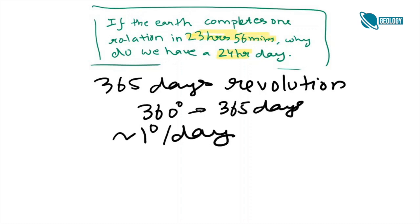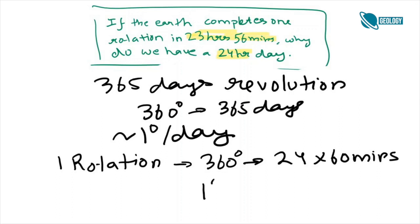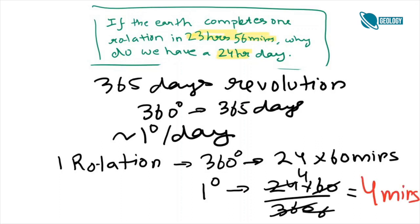Along its axis, the earth takes approximately 24 hours to complete a 360 degree rotation. But now it has to cover 1 degree extra. So in total, it takes 23 hours 56 minutes to complete one rotation and 4 minutes extra to face the sun again.